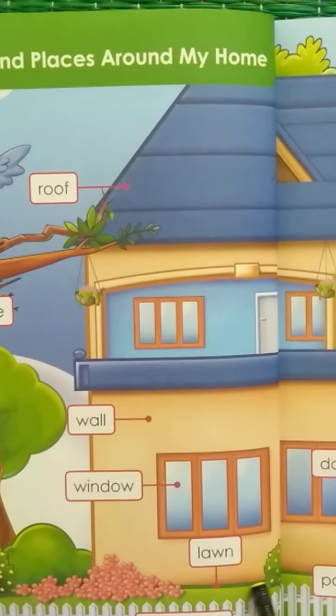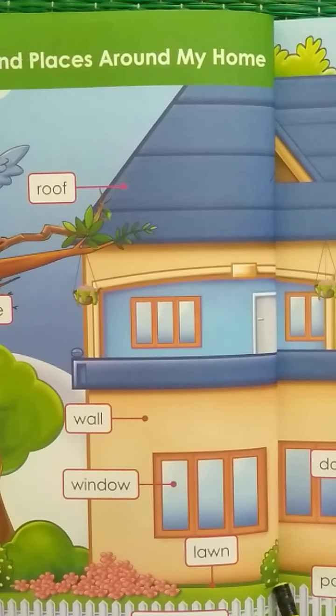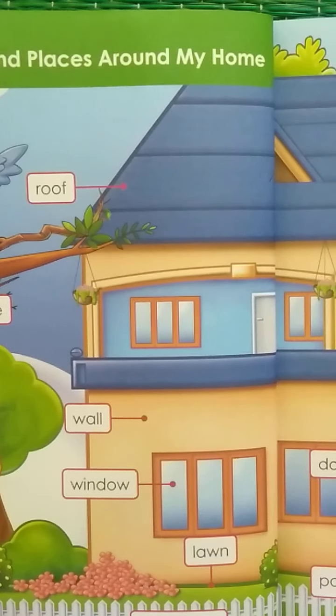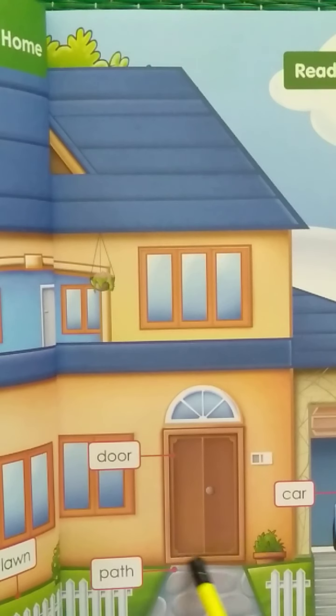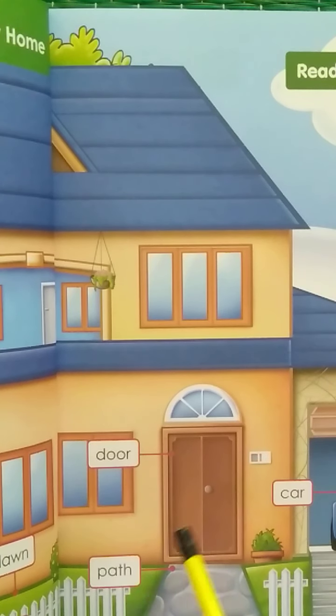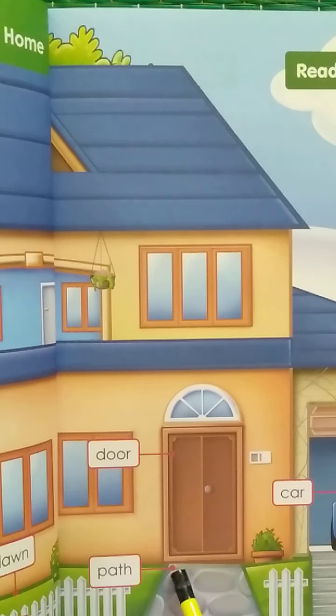And see, what is this green area called as in front of the house? Yes, it's a lawn. What is this? Lawn. Now what is this called as? Door. What is this? Door. Every house has a door, right? And this area which is leading towards the house is called as path. This area is called as path.